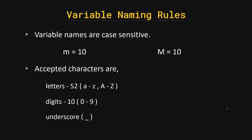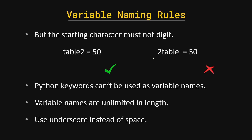Our next topic is variable naming rules in Python. First, variable names are case sensitive — lowercase 'm = 10' and uppercase 'M = 10' are two different variables. The acceptable characters are letters a–z and A–Z, digits 0–9, and the underscore. You cannot start a variable name with a digit — you can use digits in the middle or at the end, but not at the start.